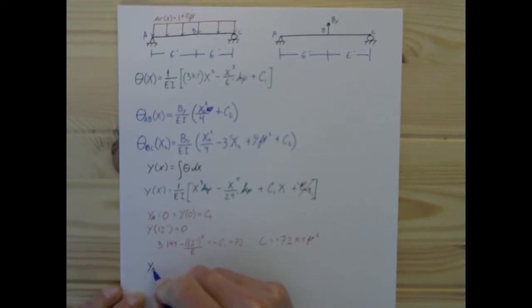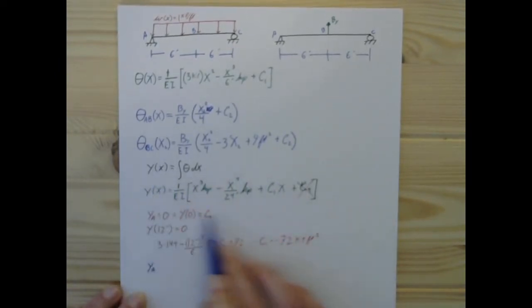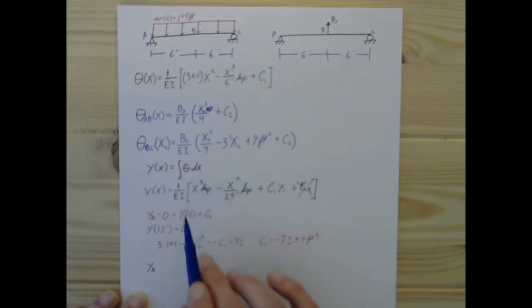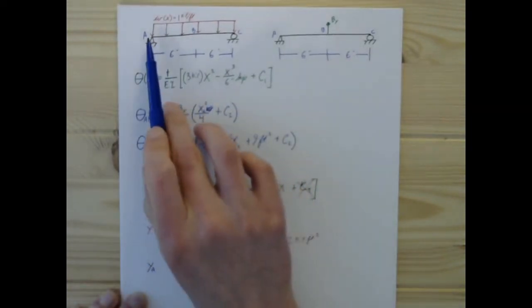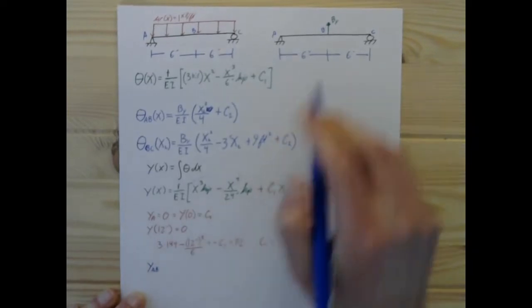Now, for this problem, because once we have C1, guess what, all of this is figured out. That's 0, this is negative 72 kip feet squared, and then these are either x or constants. So the deflection due to this load, we've got that now. We're good.